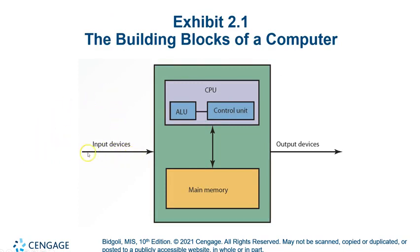Data comes in from the mouse, keyboard, sensors, or whatever input device is being used. The instructions go to the CPU, and the control unit determines what to do — for example, add two numbers. The arithmetic logic unit gets the numbers from memory, does the math, stores the results back in memory, and then sends it out or fetches more data. It's a constant cycle: get the instruction, process it, get the next instruction, process it.